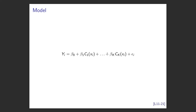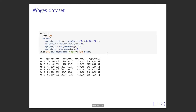The model is again linear: y = β₀ + β₁·C₁(x) + ... + β_K·C_K(x). C₀ is absorbed into the intercept — if you're not in any other bin, you're in that one. To implement this in R there are several approaches using the `cut` function.